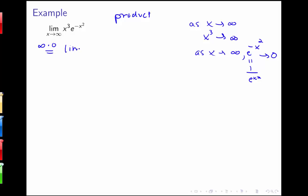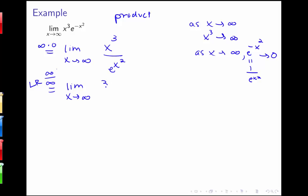That tells me my next step is to rewrite this as a quotient. An easy way with negative exponents is to move that to the denominator, so I now have x cubed over e to the x squared — which is of the form infinity over infinity. I can apply L'Hôpital's rule and take the derivative of the numerator over the derivative of the denominator. That gives me 3x squared over e to the x squared times 2x, using the chain rule. But this still looks like infinity over infinity, so I apply L'Hôpital's rule again.